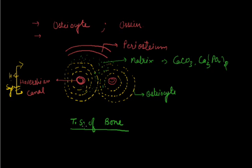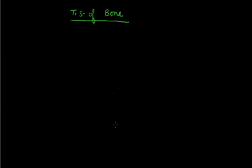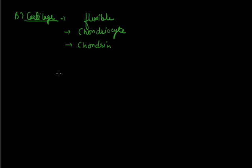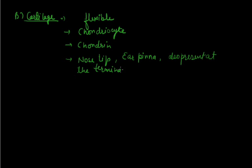Now we will discuss the structure of cartilage. Cartilage is a flexible structure. It is made up of chondrocytes, and the protein present in cartilage is chondrin. Cartilage is usually present at the nose tip, ear pinna or external ear, and at the junction of long bones, where it forms a pad-like structure at the terminal end of long bones.